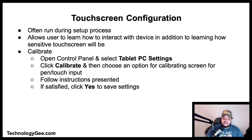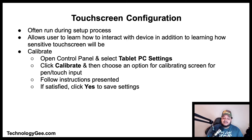To calibrate a touch screen, follow these steps: open the Control Panel and select Tablet PC Settings — if not present, check that the drivers are installed. Click Calibrate and choose an option for calibrating the system for pen or touch input. Follow the on-screen instructions to begin calibration, and if satisfied with the settings, click Yes to save.